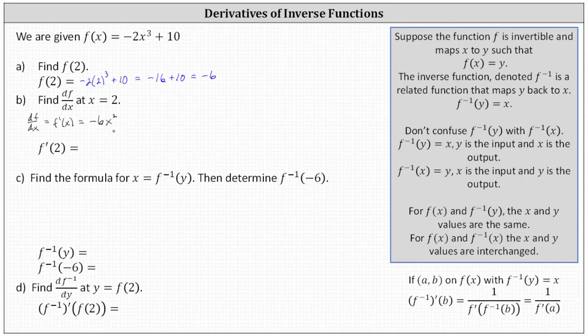Now to determine df dx at x equals two, or f prime of two, we substitute two for x in the derivative function, which gives us negative six times the square of two, which is equal to negative six times four, or negative 24.